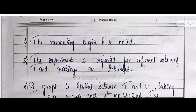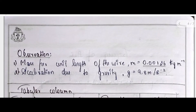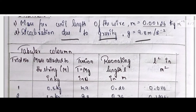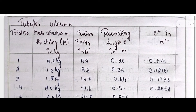Here is the procedure. The mass per unit length of the wire: small m = 0.00126 kg per meter — this is a given value. Acceleration due to gravity: small g = 9.8 m/s². Here is the tabular column in which you have to tabulate your readings. The mass attached to the string goes: 0.5 kg, 1 kg, 1.5 kg, 2 kg — for each reading you increase by half kg.